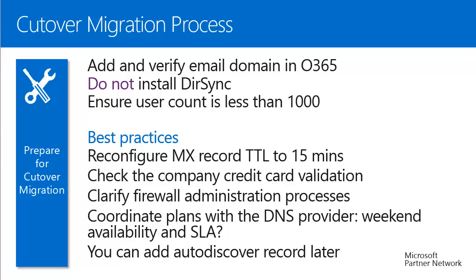Third is firewall administration. If you need to make any changes on the firewall, you need to clarify who will administer it and what processes to follow. Fourth, you need to figure out who can make modifications to your DNS records, ensure that person is available even on weekends, and check the service level agreement for your DNS provider. When you add your domain record, you are asked to add the autodiscover record — however, you can do that later when you are ready to switch.